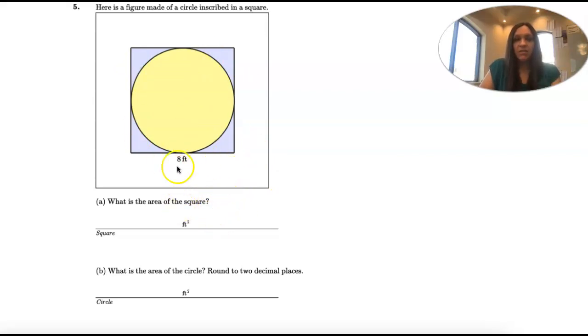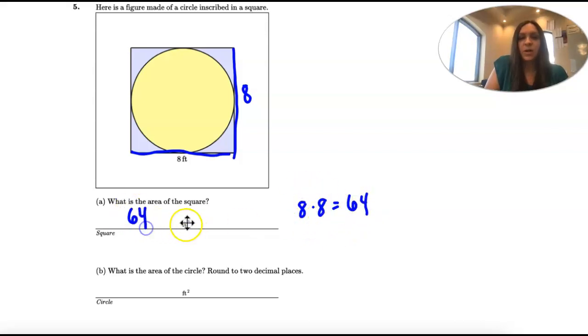First we've got to find the area of the square. A square is side times side. So 8 times 8 is 64. And since it's feet times feet, it's square feet.